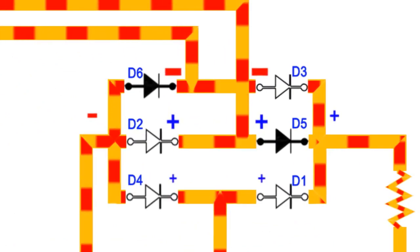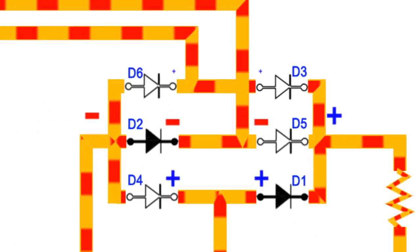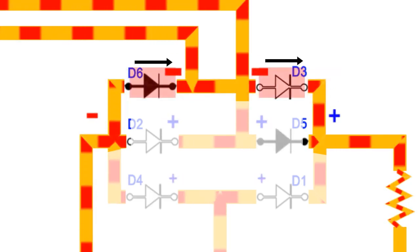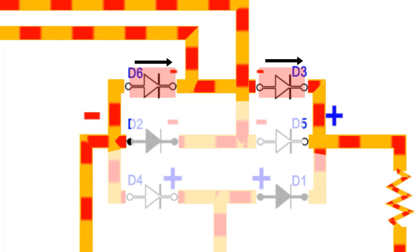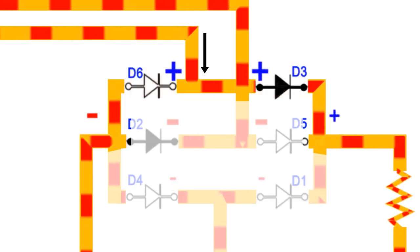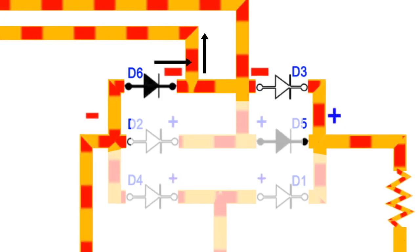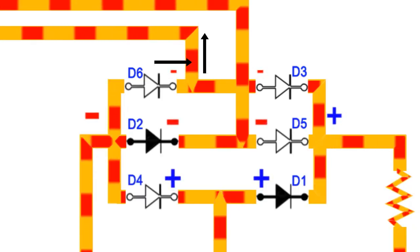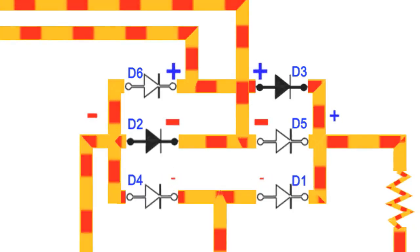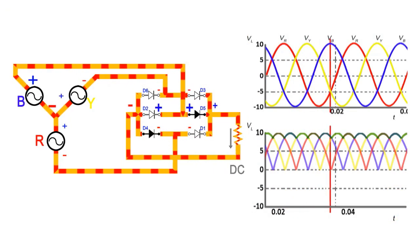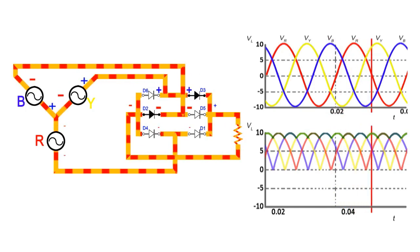We can understand this phenomenon by comparing it with a water pumping system in which every leg consists of two unidirectional valves. When fluid is pushed into the leg, it comes out from one valve. And when pulled out, it enters from another valve. So in this way, three-phase supply is converted to DC. This is also known as three-phase rectification.